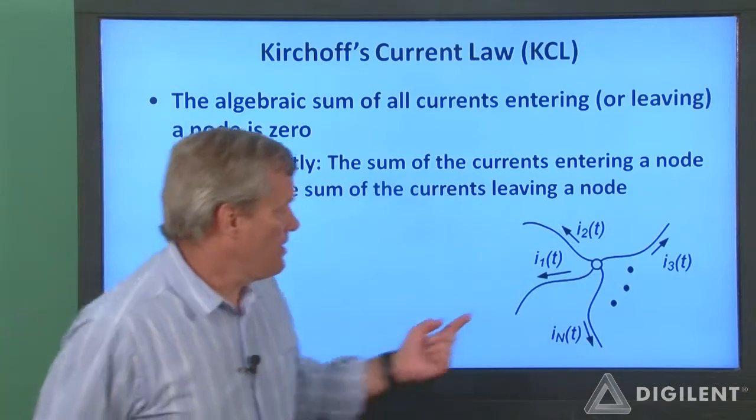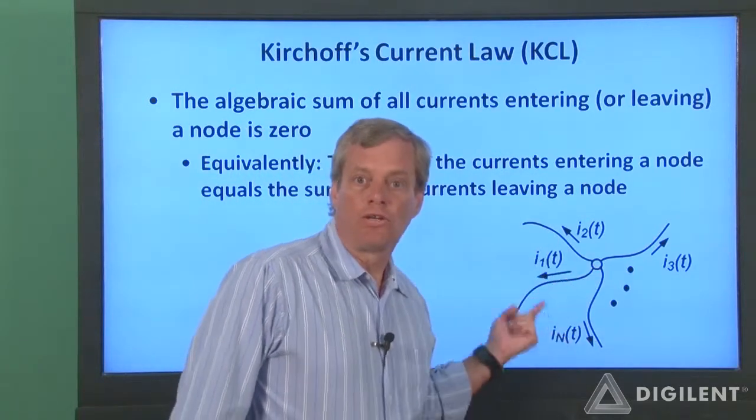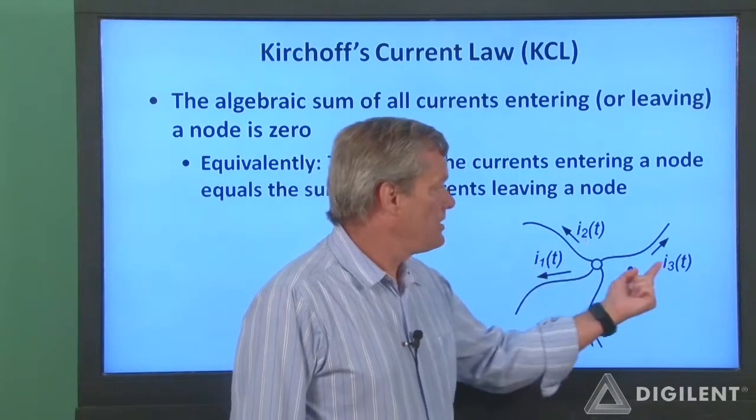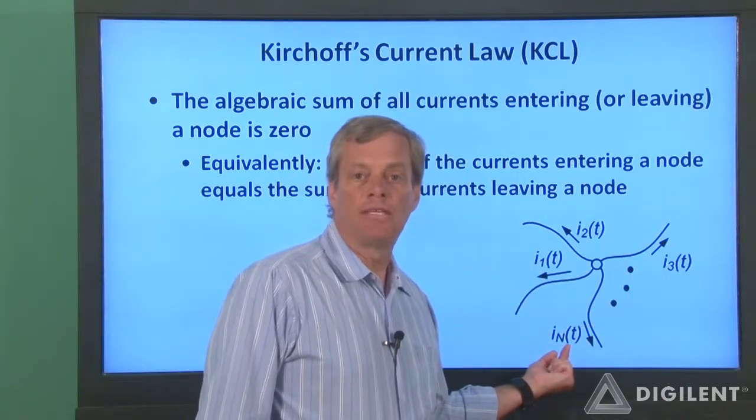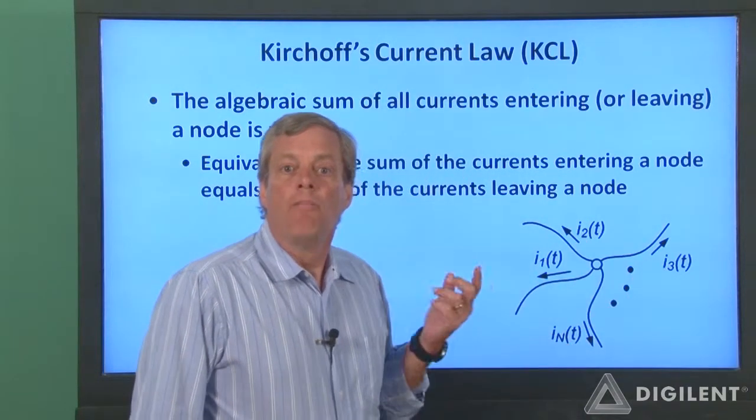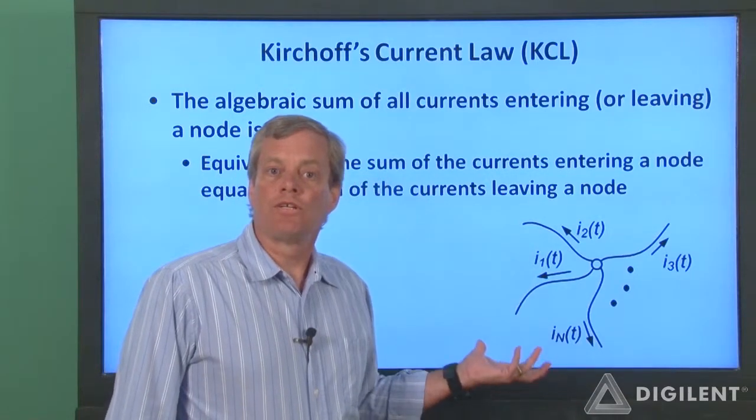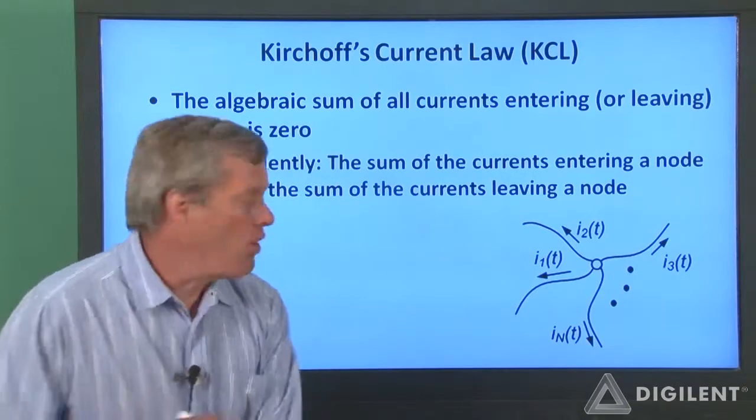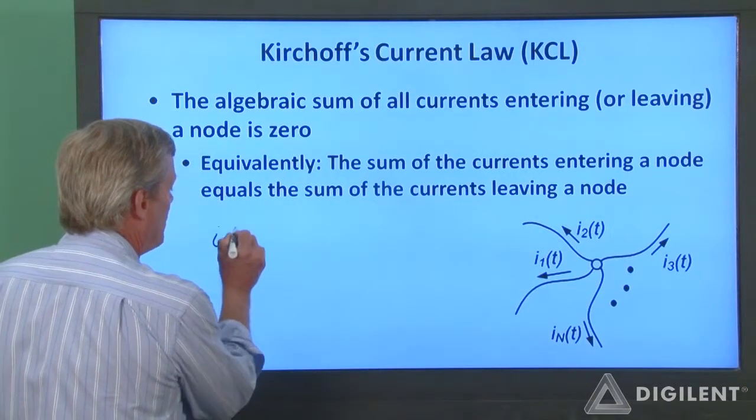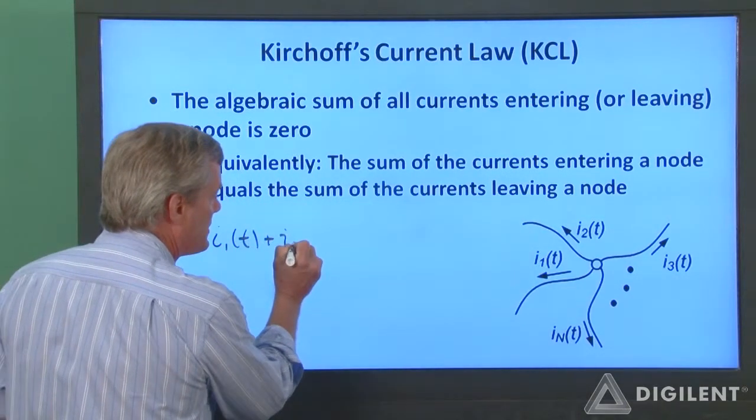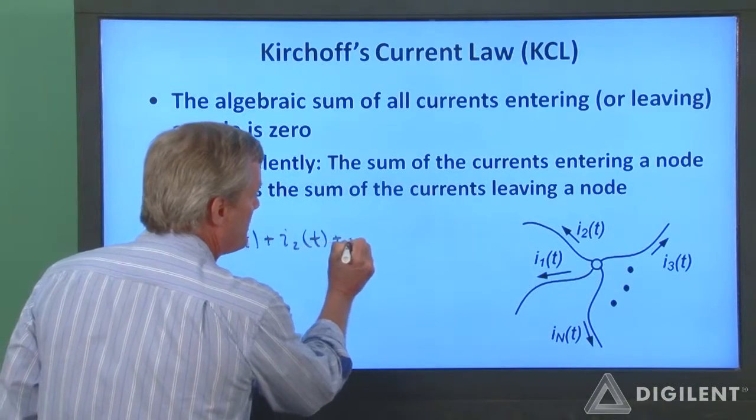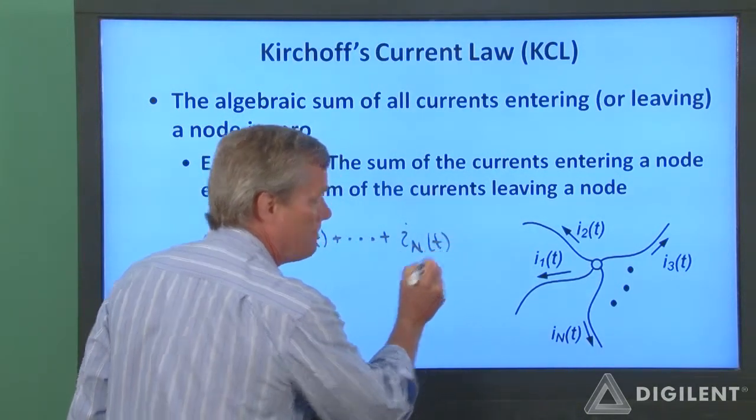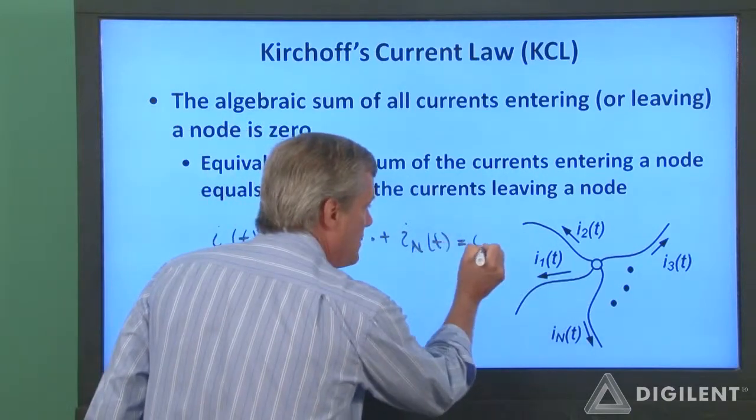We have a circuit node here with n currents leaving the node. The currents are i1 of t, i2 of t, i3 of t, on up to i sub n of t. By coincidence, all the currents are assumed to be leaving the node. So, if we sum the currents leaving the node, we get i1 of t plus i2 of t plus all of our other currents up to i sub n of t. That is equal to zero.